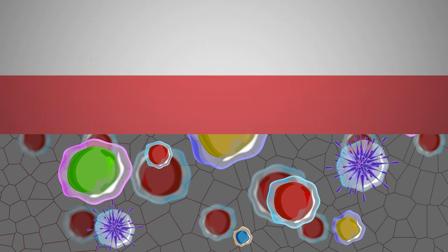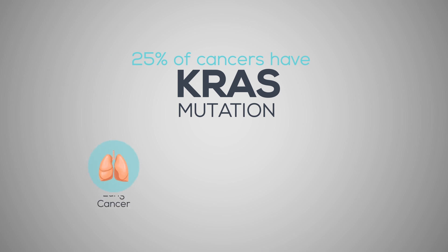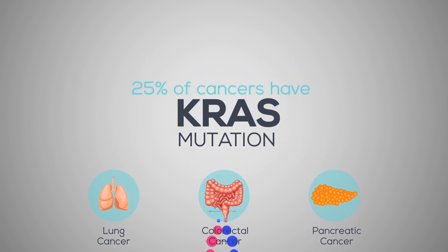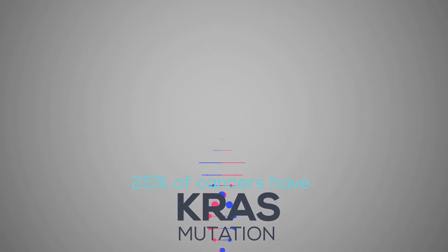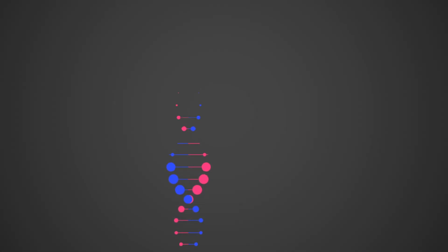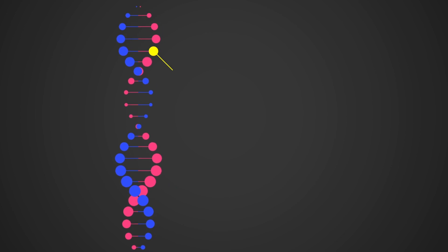Around 25% of all cancers have a KRAS mutation. It is often found in lung, colorectal, or pancreatic cancers. There are different types of KRAS mutations. The most common type is G12C.